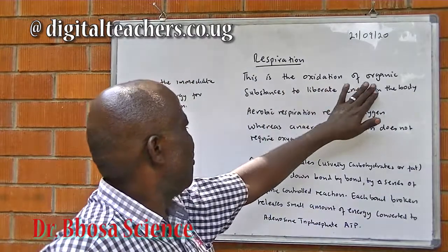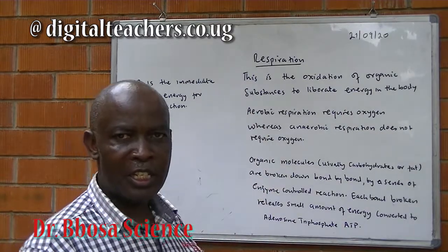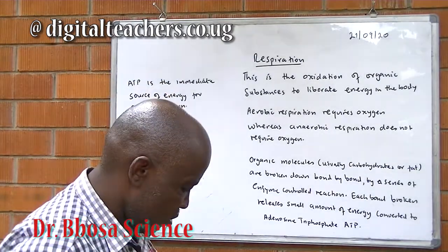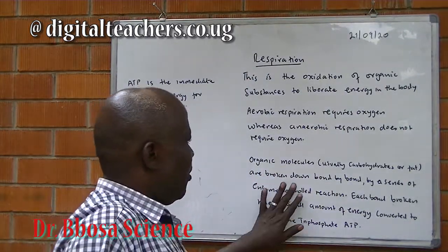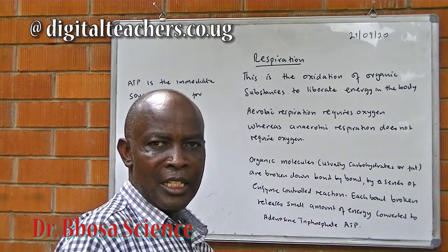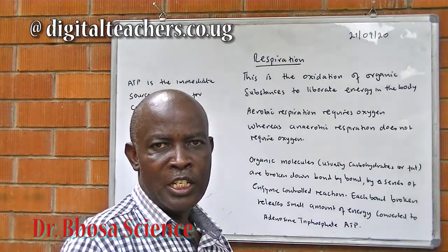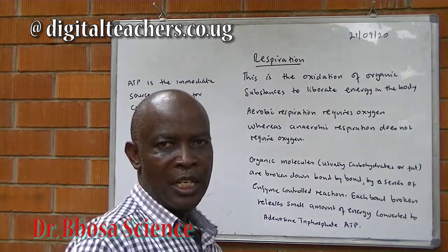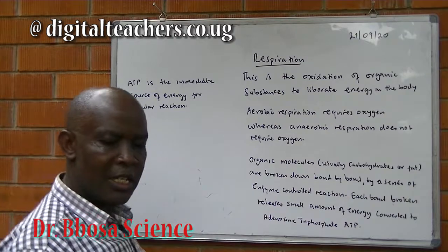Respiration is the oxidation of organic substances to liberate energy in the body. Aerobic respiration requires oxygen while anaerobic respiration does not require oxygen. Organic molecules, usually carbohydrates or fats, are broken down bond by bond by a series of enzyme-controlled reactions. Each bond is broken with a small amount of energy which is converted to adenosine triphosphate, or ATP. ATP is the immediate source of energy for cellular reactions.